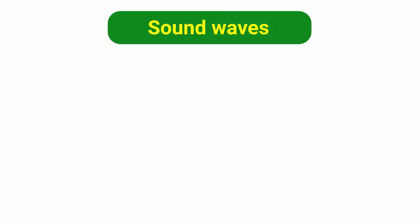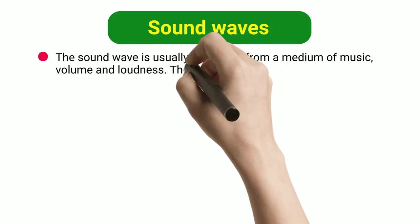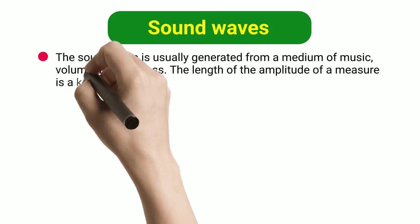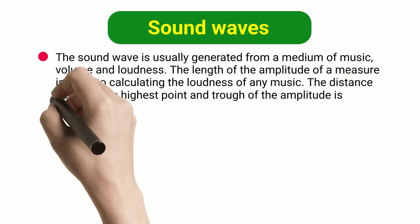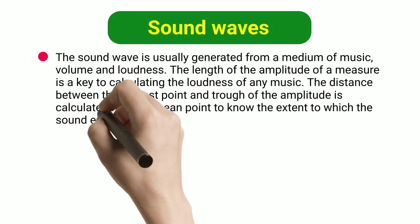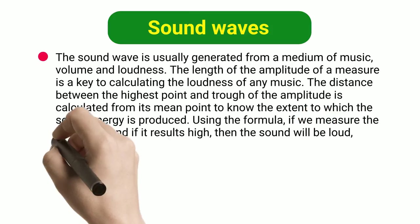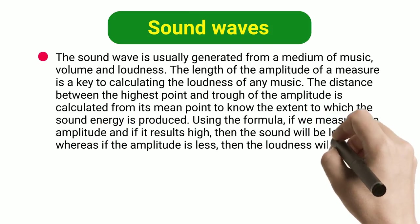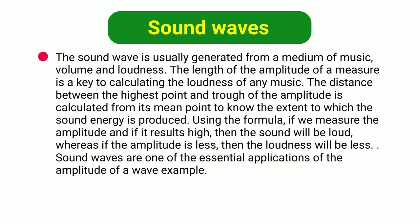Sound Waves: The sound wave is usually generated from a medium of music, volume, and loudness. The length of the amplitude is a key to calculating the loudness of any music. The distance between the highest point and trough of the amplitude is calculated from its mean point to know the extent to which the sound energy is produced. Using the formula, if we measure the amplitude and it results high, then the sound will be loud; whereas if the amplitude is less, then the loudness will be less. Sound waves are one of the essential applications of the amplitude of a wave.